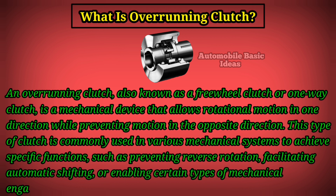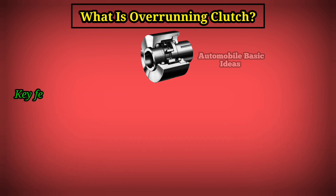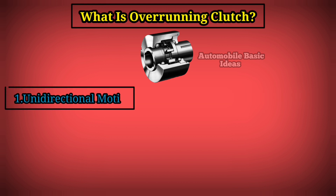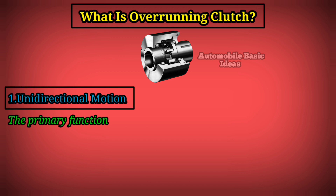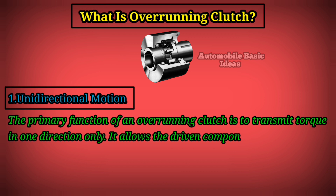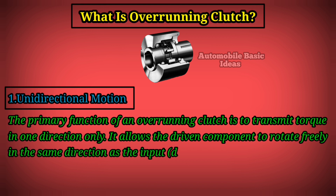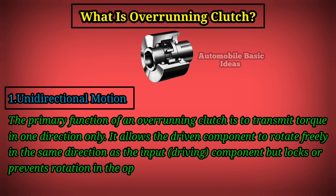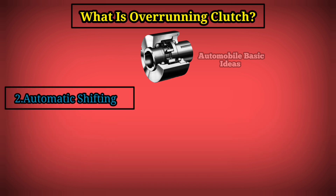Key features and applications of overrunning clutches include: one, unidirectional motion. The primary function of an overrunning clutch is to transmit torque in one direction only. It allows the driven component to rotate freely in the same direction as the input driving component, but locks or prevents rotation in the opposite direction.